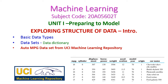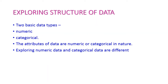In today's machine learning class, we will see another important topic from the course unit: exploring the structure of data. We already know there are two types of data — numerical data and categorical data. When it comes to exploration, we need to explore both. Before that, we require data, so let us try to download the auto MPG dataset from the UC Machine Learning Repository.